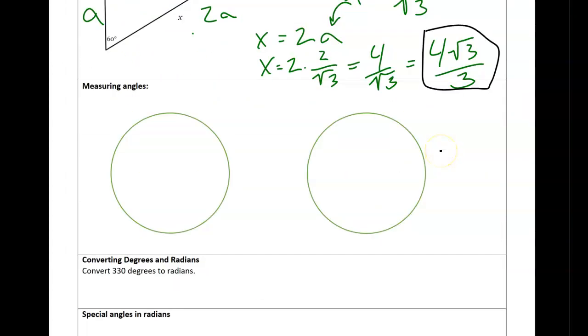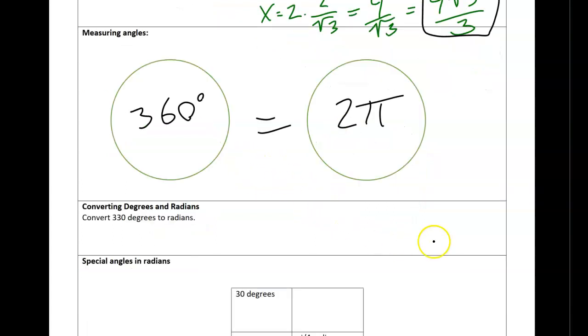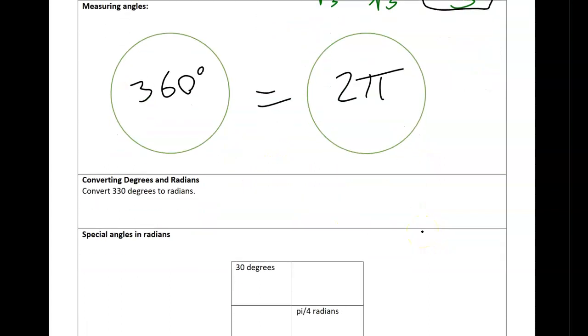Because notice these are my special angles that show up in this guy. So we need to know the relationship between degrees, which is a whole circle is 360 degrees, think Tony Hawk, and radians. And the whole circle in radians is 2 pi. So these are equivalent.